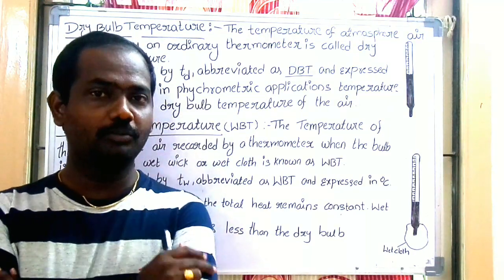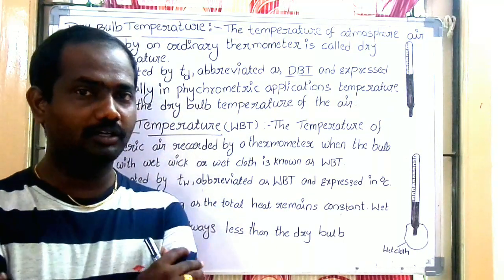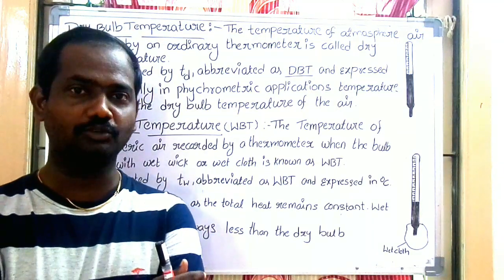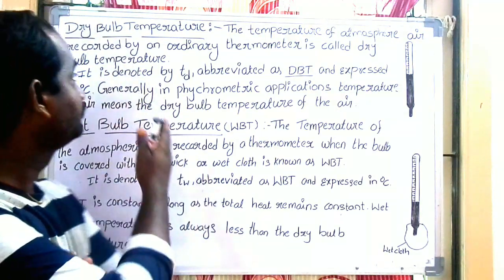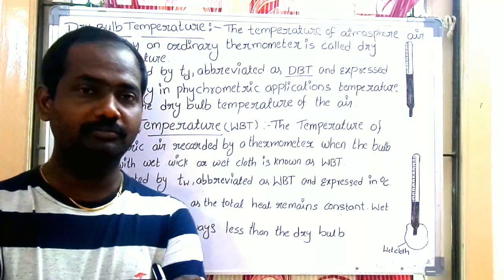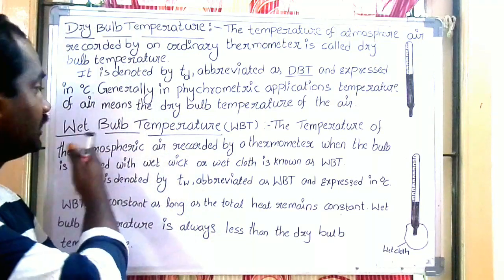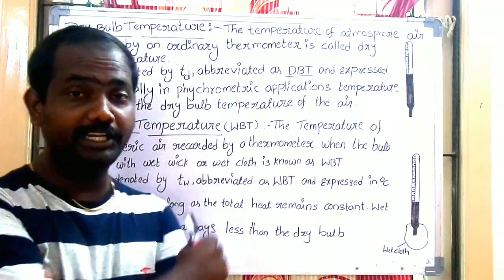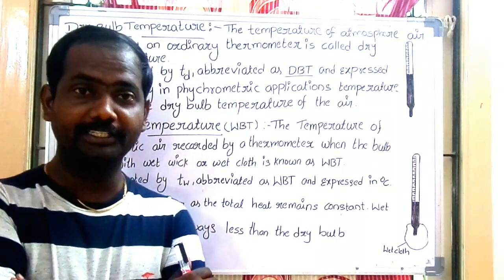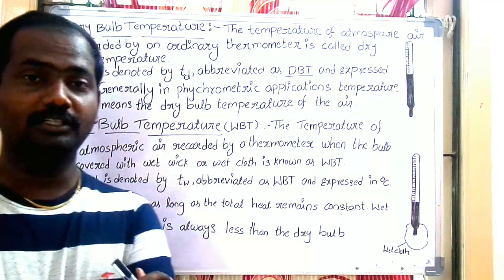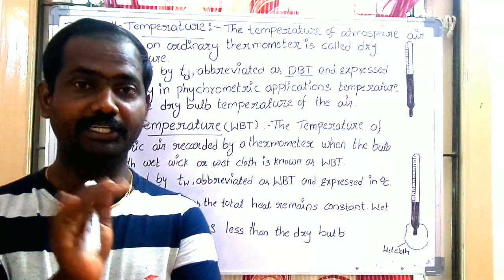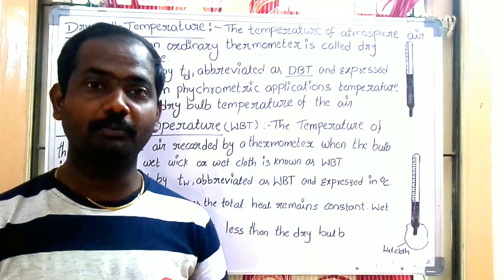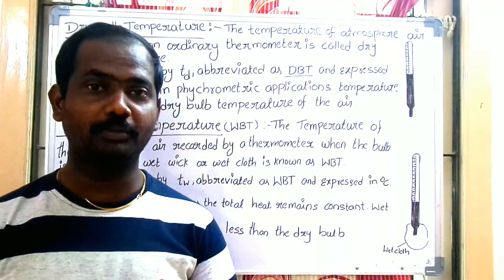One of the most important things is Dry Bulb Temperature and Wet Bulb Temperature. Dry Bulb Temperature is abbreviated as DBT, and Wet Bulb Temperature is abbreviated as WBT. So here is the Dry Bulb Temperature and Wet Bulb Temperature.